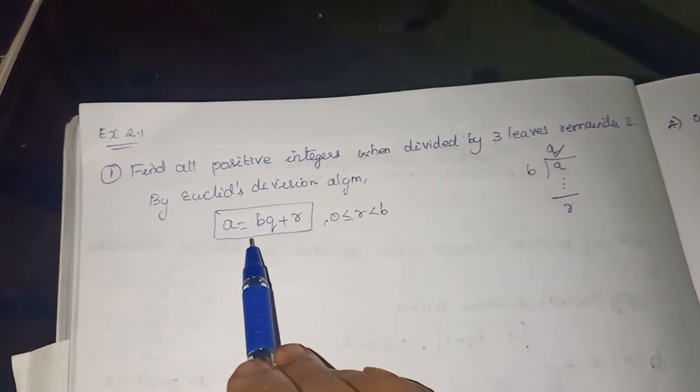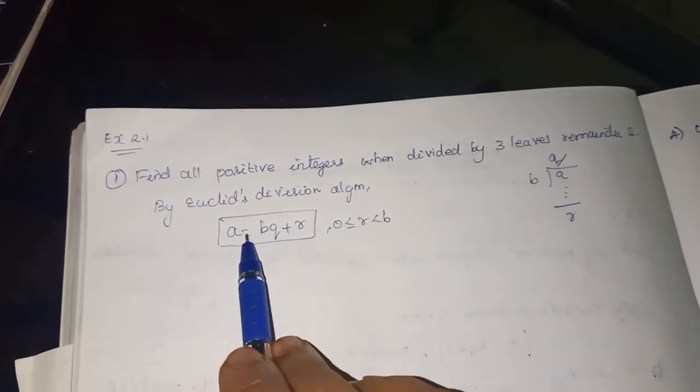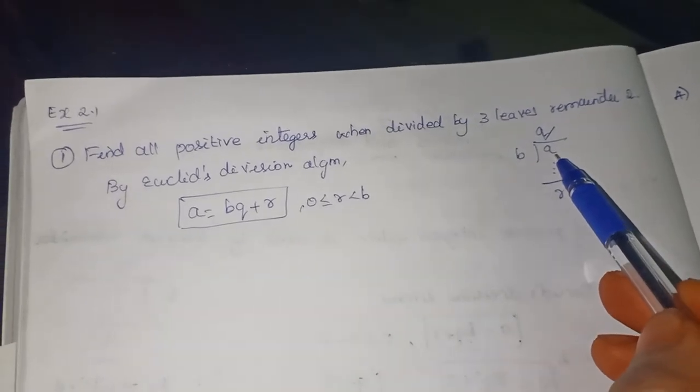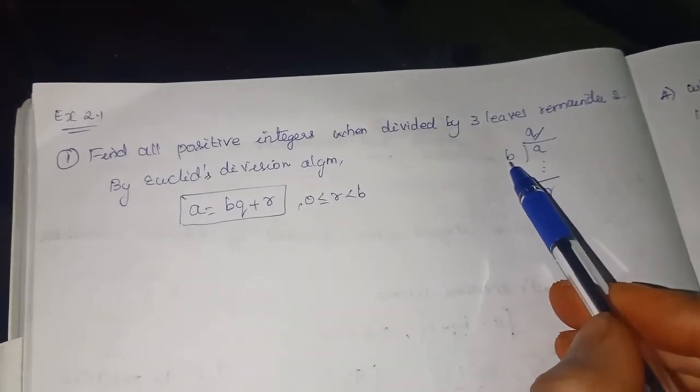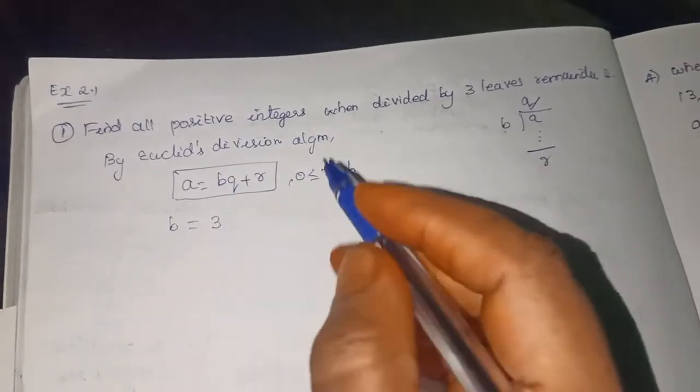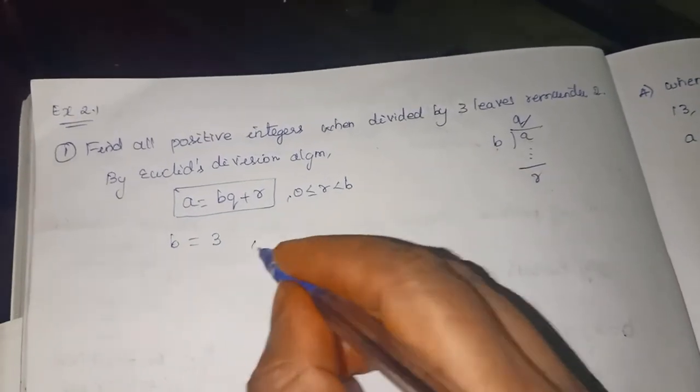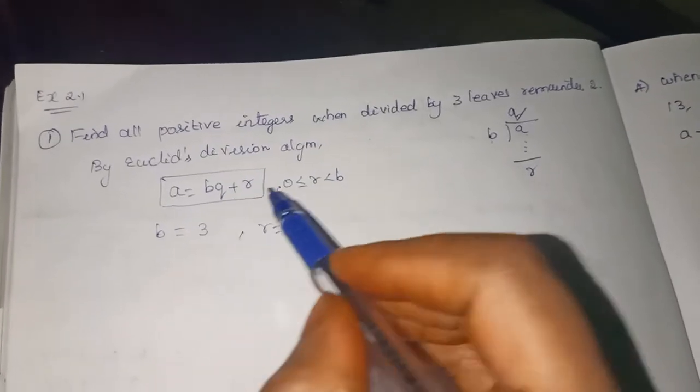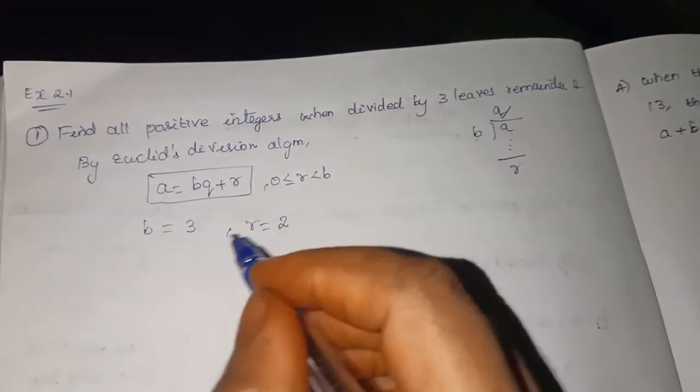A is equal to BQ plus R. So we need to find all the positive integers when divided by 3. So our divisor is 3, given in the question. Leaves remainder 2. So remainder is also given. So we have to find A. So we use Euclid's division algorithm. A is equal to BQ plus R. Start applying.